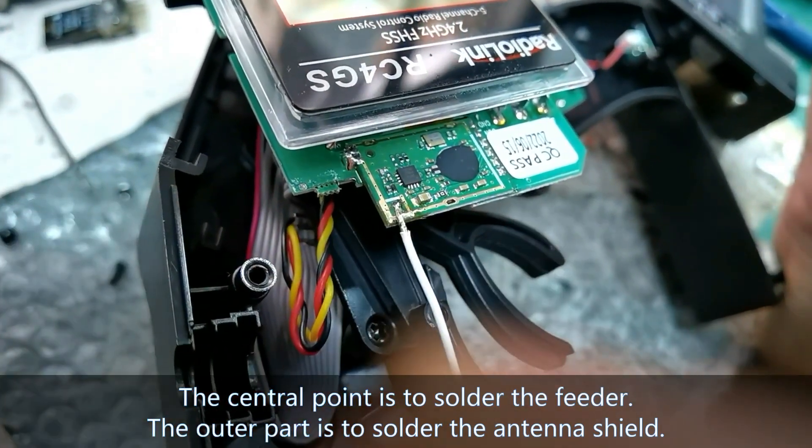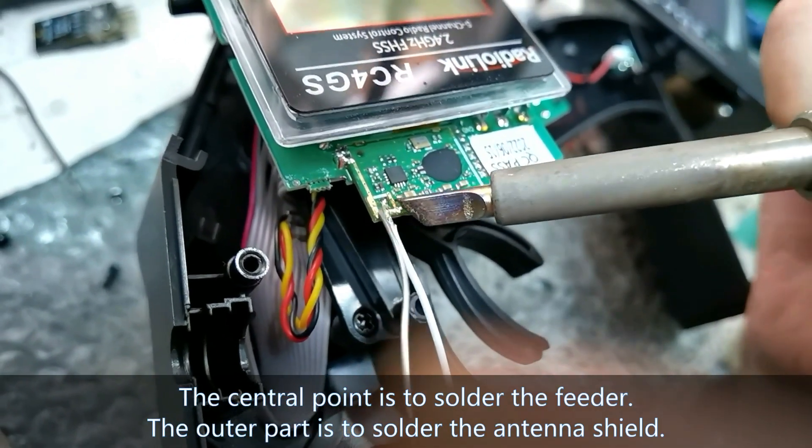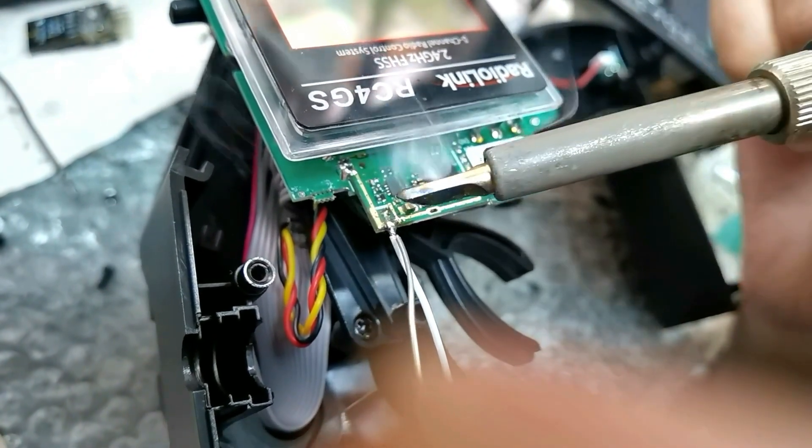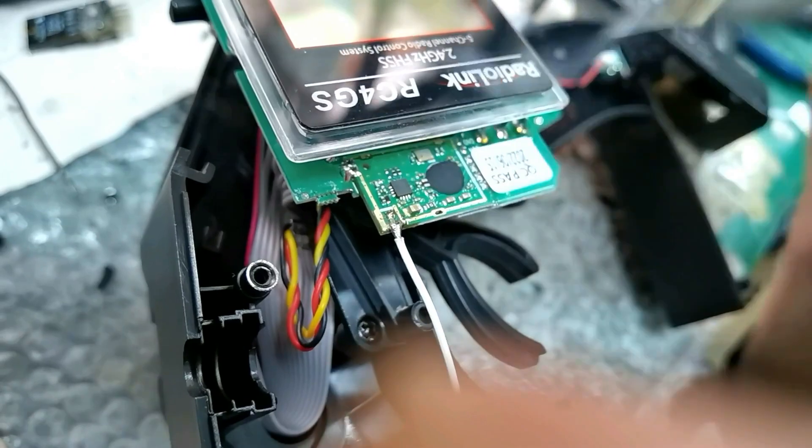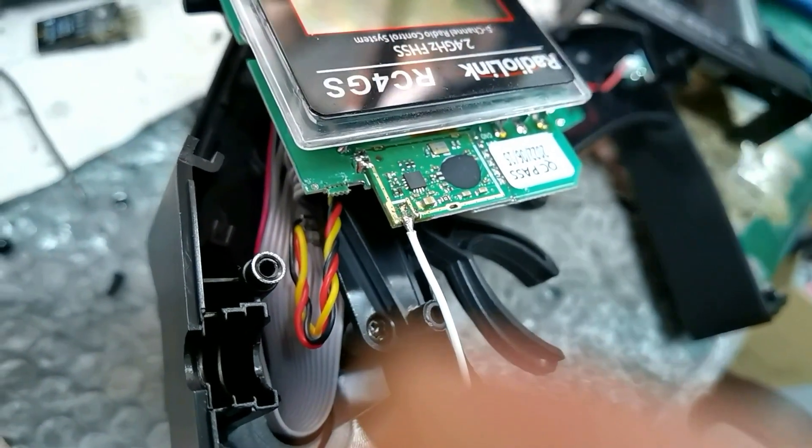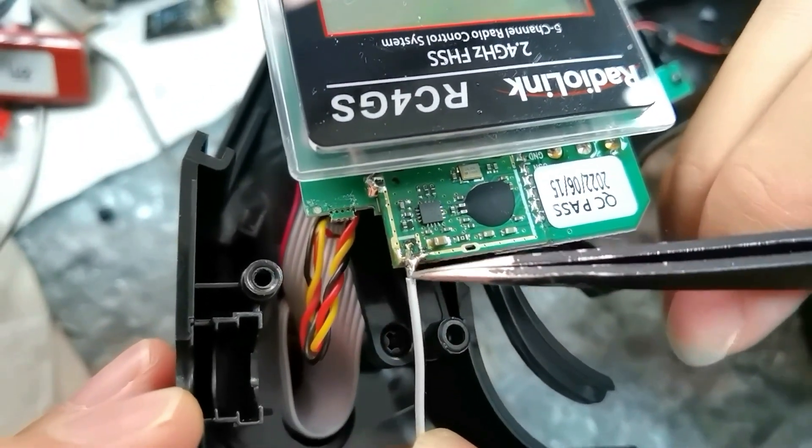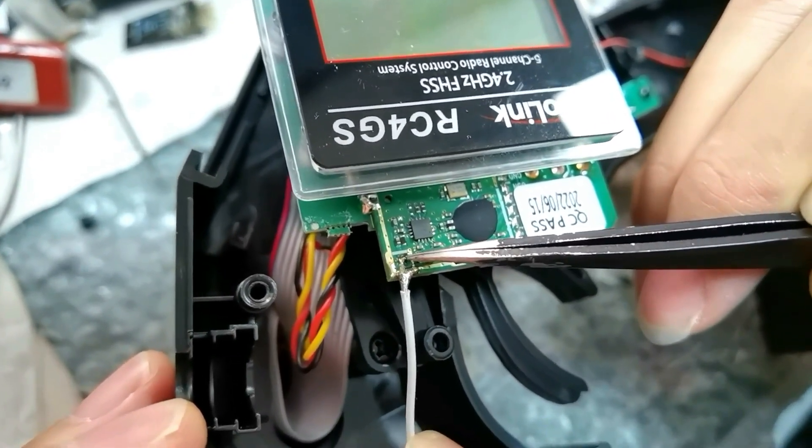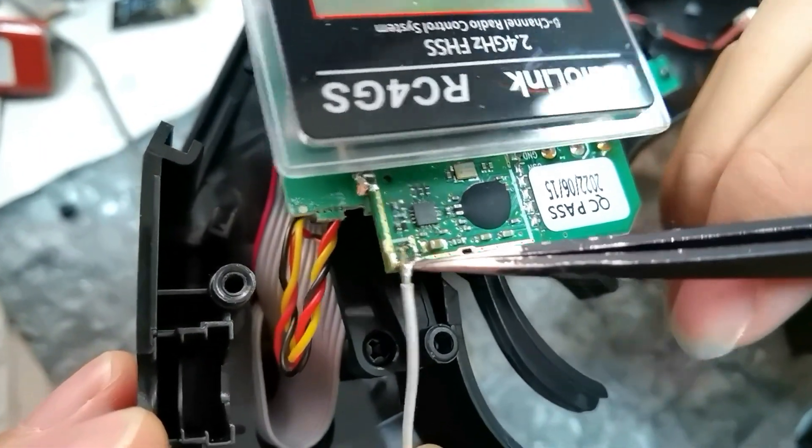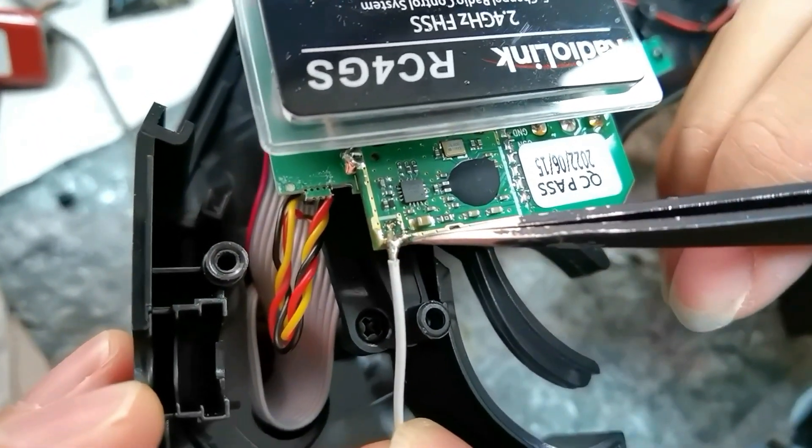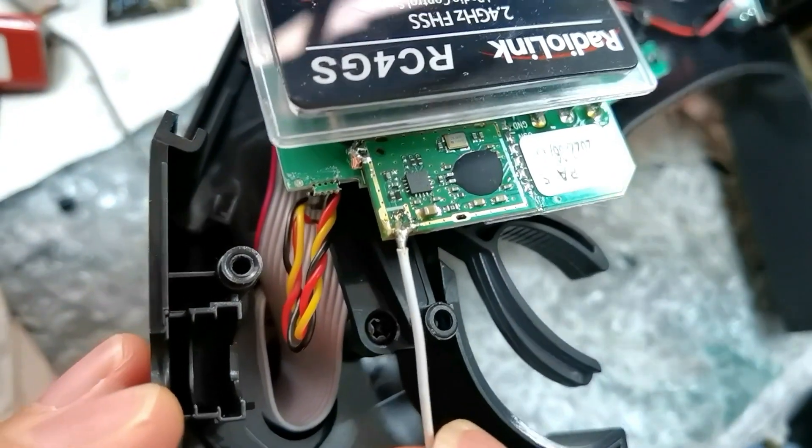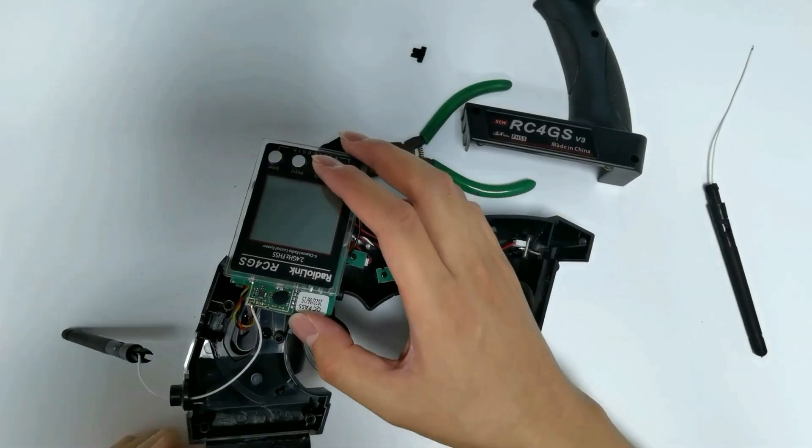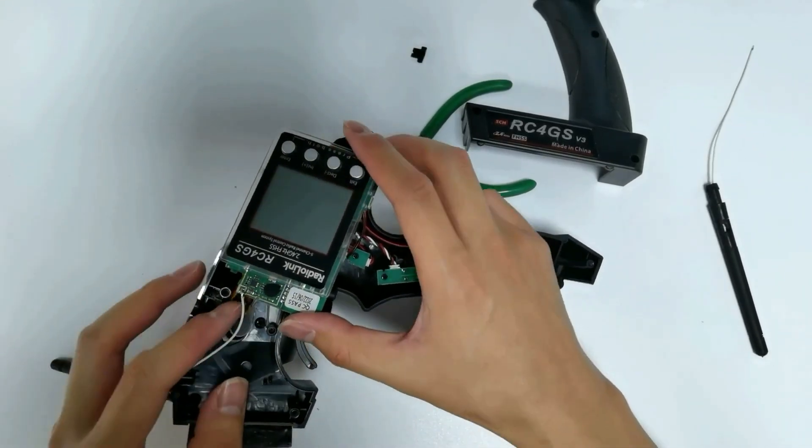Then solder the antenna shield to the outer part. The second point is soldered. This is how it looks after the soldering of two points is done. We have finished the soldering.